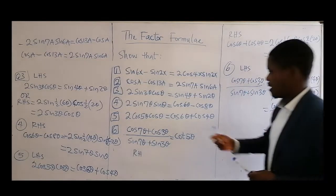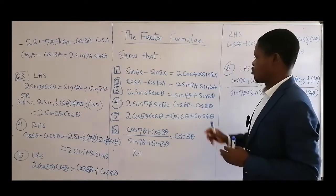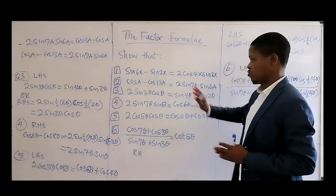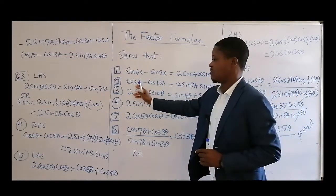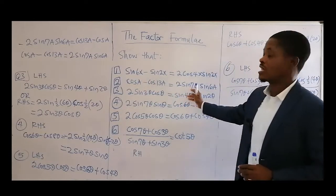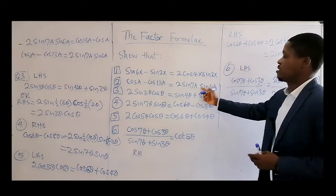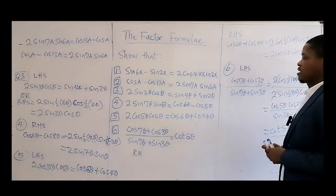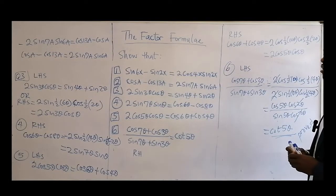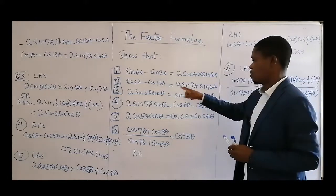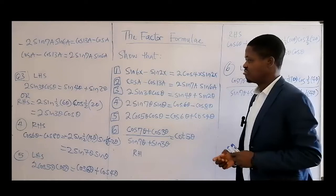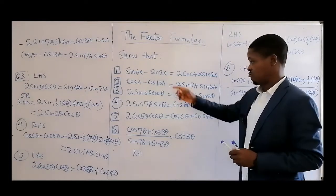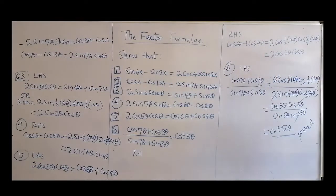Ideally, the difference of cosines should have minus 2. If you stop on the left-hand side, you definitely get the right-hand side. You can also stop on the right-hand side, but if you do, you have to force that minus in. To avoid complications, just start from the left-hand side.